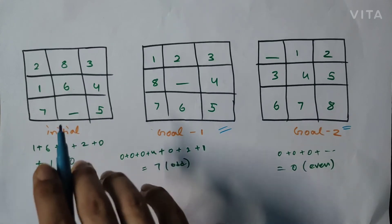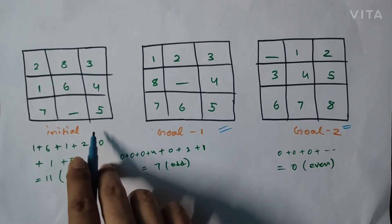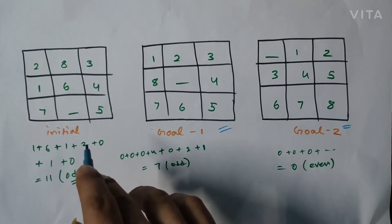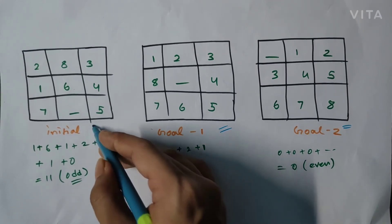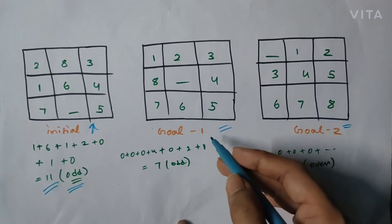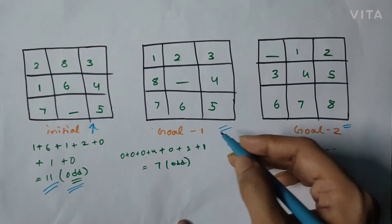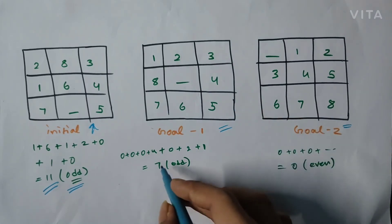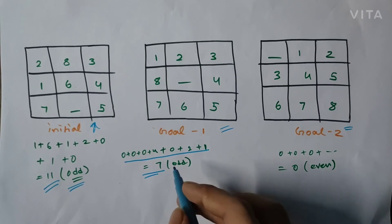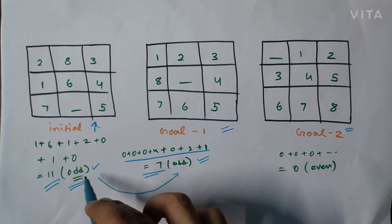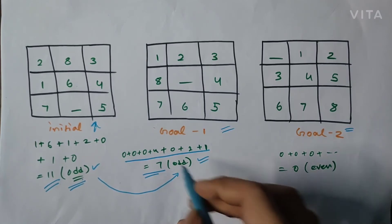The logic is similar. First, we check the inversion count of the initial state using the same method. For this initial state, the inversion count comes out to 11, which is odd. Then we check goal state 1 — its inversion count comes out to 7, which is also odd. Since both are odd, the problem is solvable — we can reach goal state 1 from this initial state within a finite number of steps.